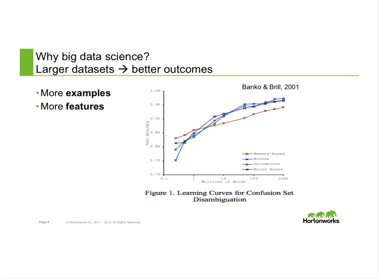The last thing is that larger datasets essentially create better outcomes. There's a little research being done on that — one paper by Banko and Brill from 2001 about natural language processing. Generally, we know that in many cases we can add more examples for supervised learning or more features to learn by. In both cases, if we do that in the proper way, we can get better predictors and better outcomes. That's what we all want.